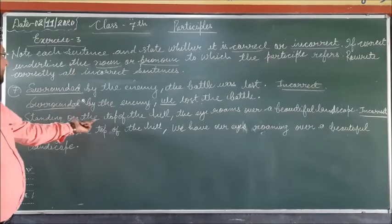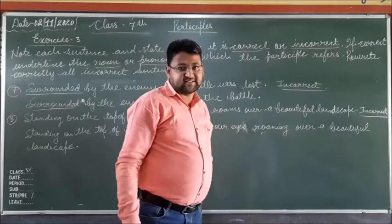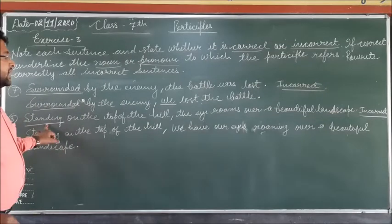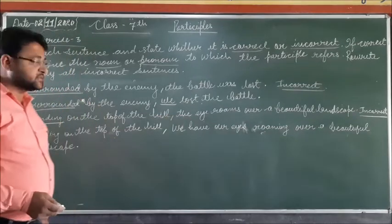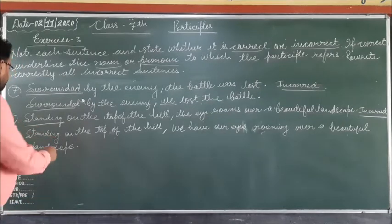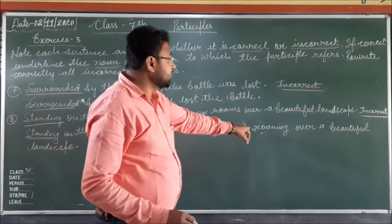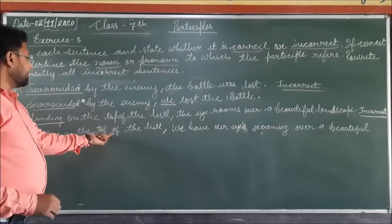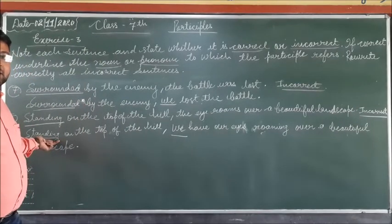Eighth sentence: 'Standing on the top of the hill, the eye roams over a beautiful landscape.' Here 'standing' is the participle, but there is no noun or pronoun to which it refers. So it is incorrect. The correct sentence will be: 'Standing on the top of the hill, we had our eyes roaming over a beautiful landscape.' Here 'we' is the pronoun to which 'standing' refers.